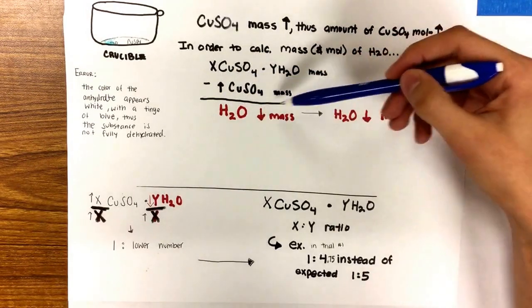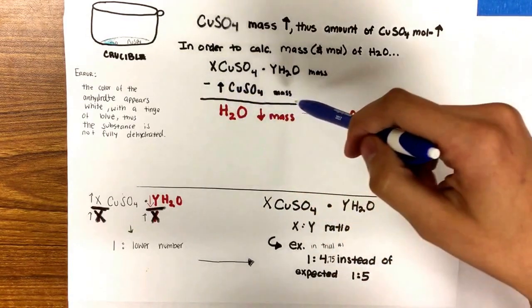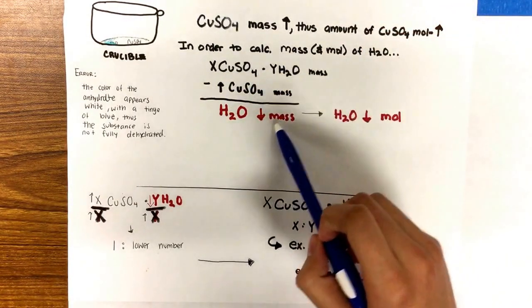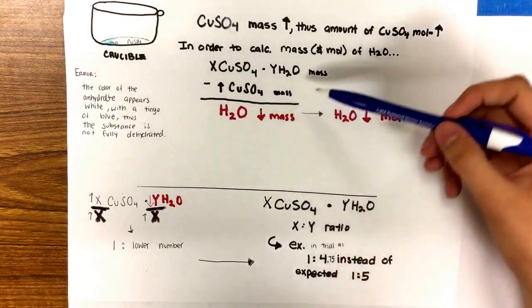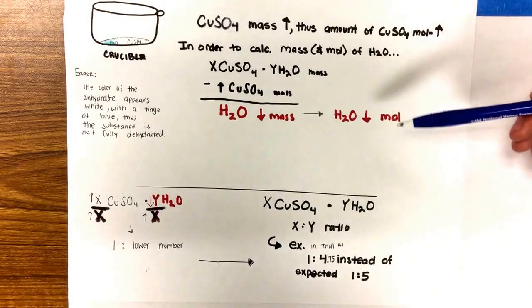This is increased because the student perceived the tinged blue substance to be completely dehydrated when in fact it was not. Therefore, the water mass would be decreased because more is being subtracted from the total, and when you convert it to moles, the moles is decreased.